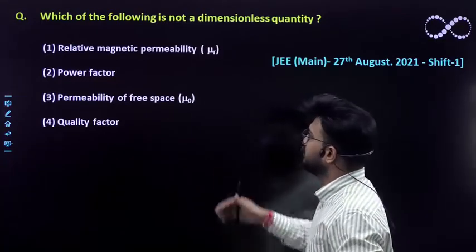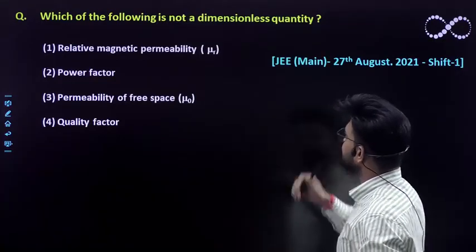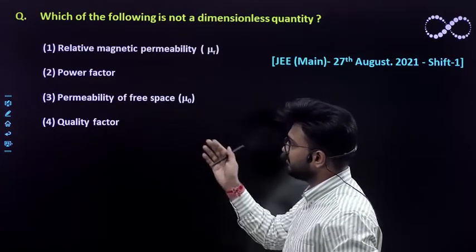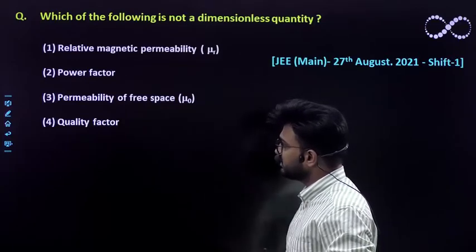Question says which of the following is not a dimensionless quantity. So you have been given relative magnetic permeability, power factor, permeability of the free space, and the quality factor.